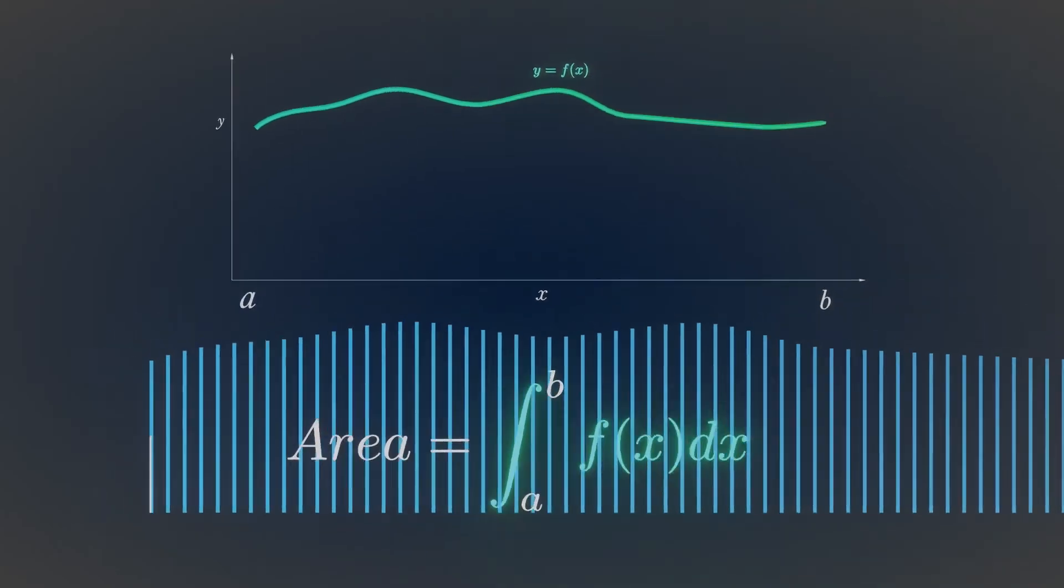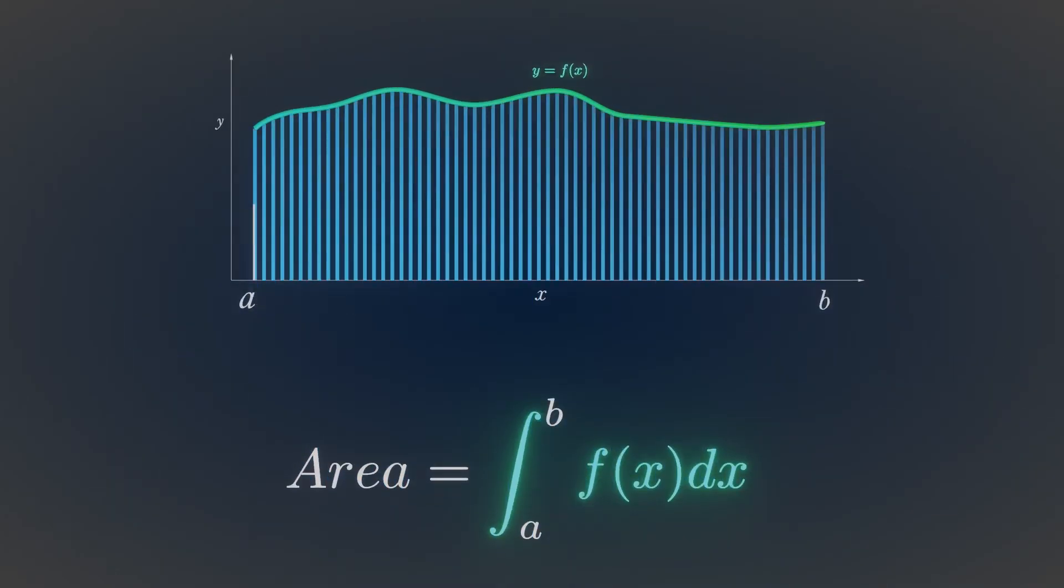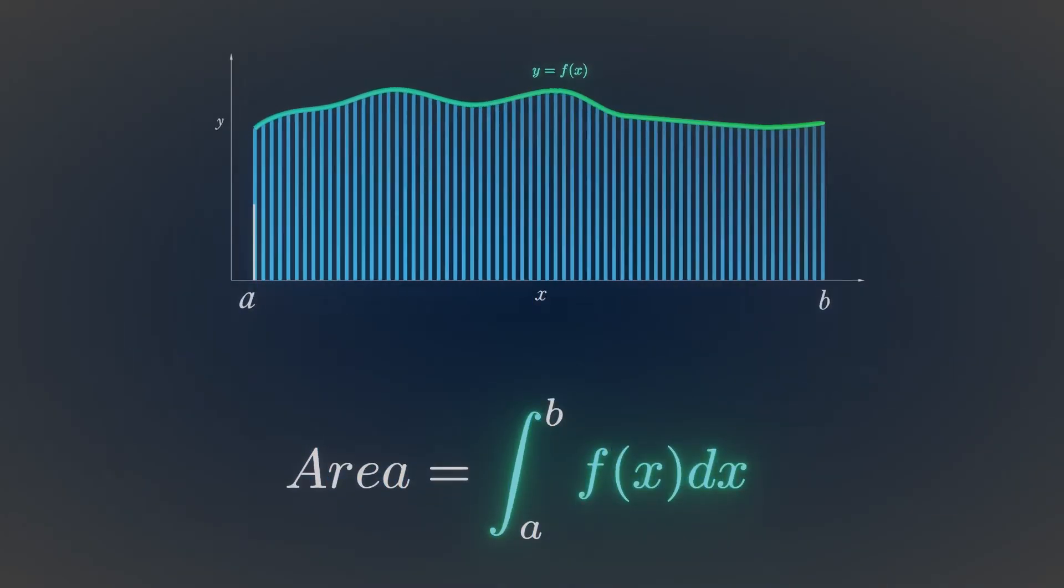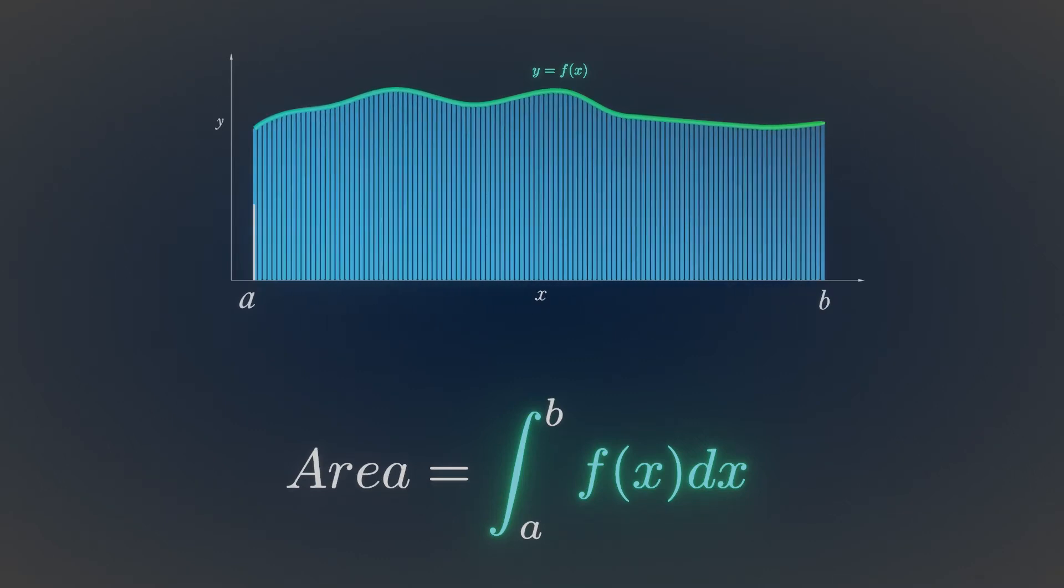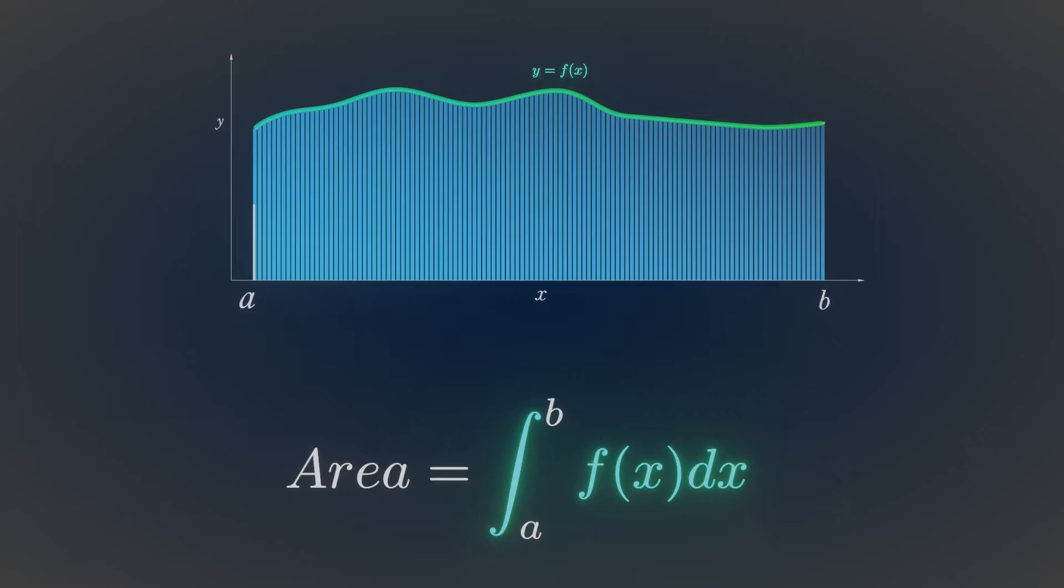The area would be more precise if our stick possesses infinitesimal width and we increase the number of sticks. This is also one kind of line integral. Here we integrate the curve with respect to the x-axis.